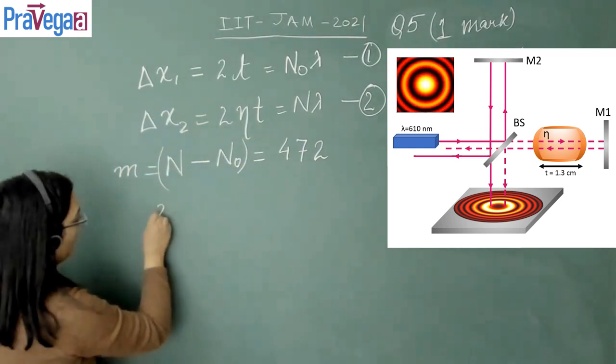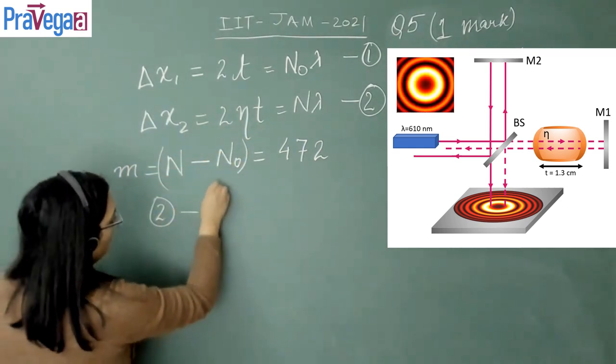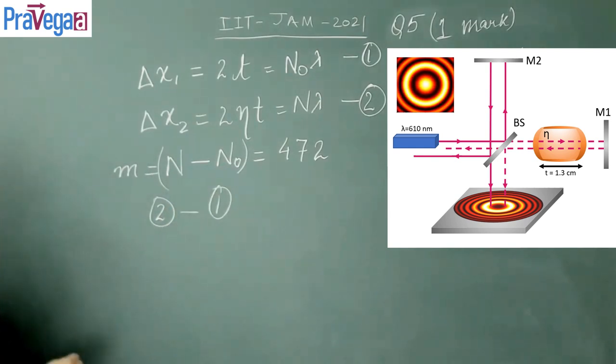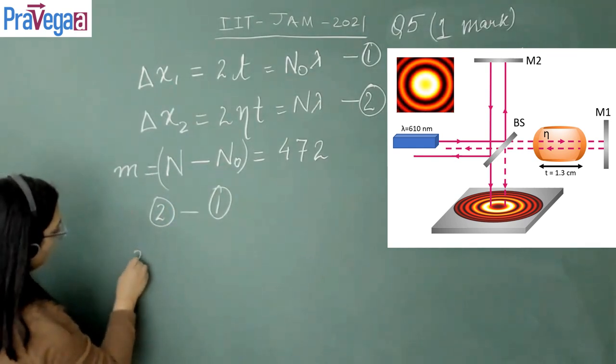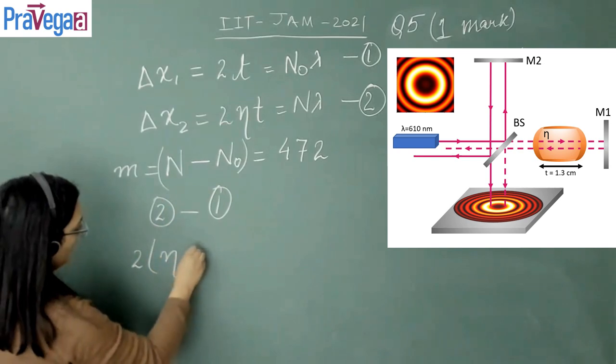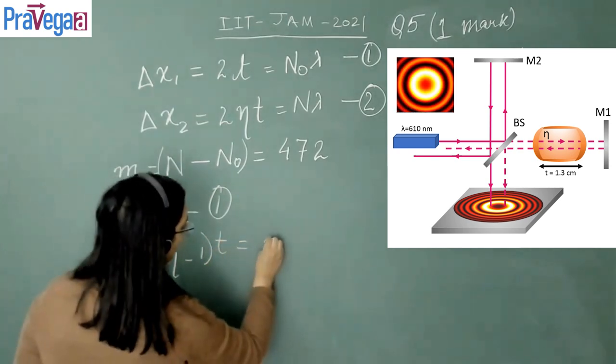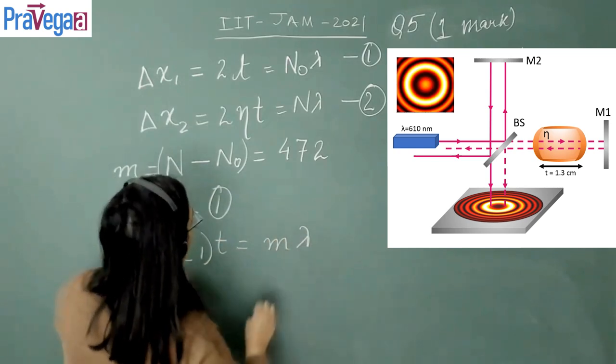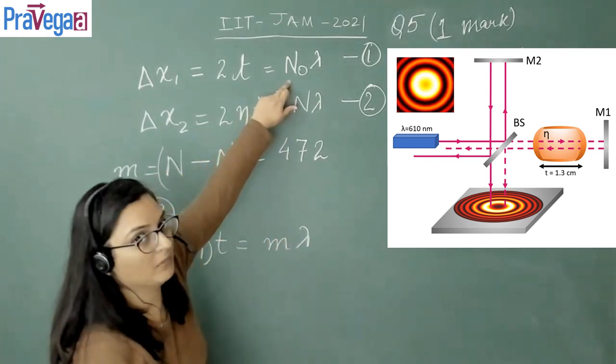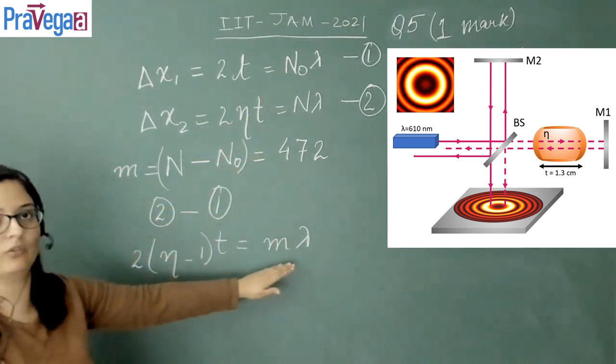We simply have to subtract equation number 2 from 1, and we get 2(eta minus 1)t equals m lambda. Please note that this will now become n minus n0, therefore m lambda.